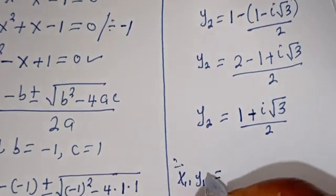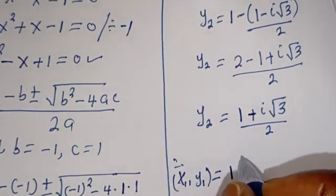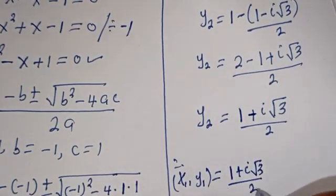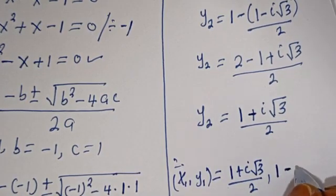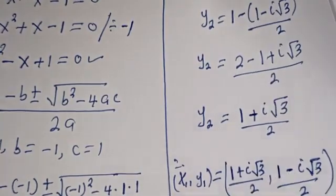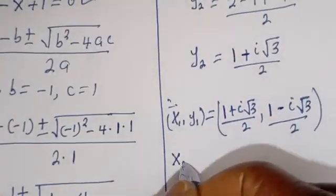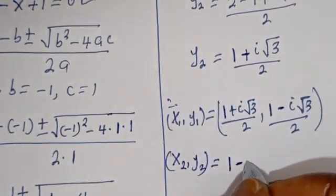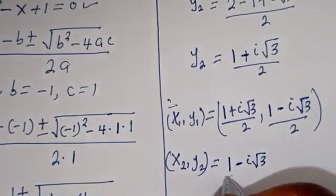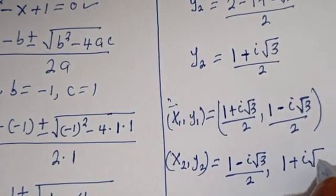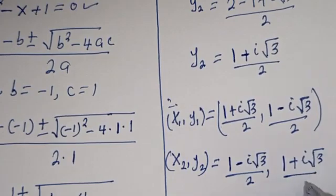Our final answers are: X1 comma Y1 is equal to 1 plus i square root of 3 divided by 2, comma 1 minus i square root of 3 divided by 2. And X2 comma Y2 is equal to 1 minus i square root of 3 divided by 2, comma 1 plus i square root of 3 divided by 2.